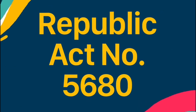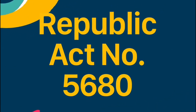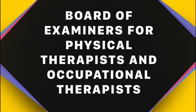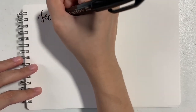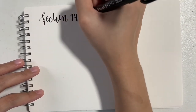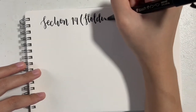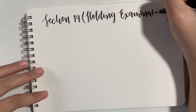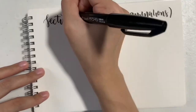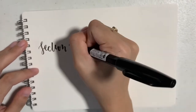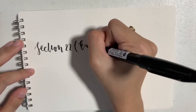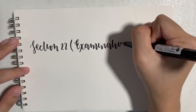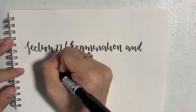Republic Act number 5680. This act was approved and implemented back on June 21, 1969, and created a Board of Examiners for Physical Therapists and Occupational Therapists. Section 14, Holding Examinations: registration for the practice of physical therapy in the Philippines shall be given by the board on the first Saturday of June and December of each year at the City of Manila or at such other places as deemed necessary. Section 22, Examination and Registration Fees: applicants shall pay an examination fee of 25 pesos, and successful applicants shall pay a registration fee of 10 pesos.